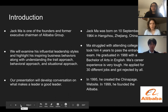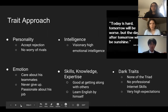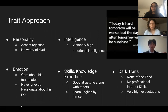Now for Jack Ma's trait approach: he is willing to accept rejections and he doesn't worry about his rivals. He has never been frightened by his rivals. He says that if they underestimate him, it will be good for him. He cares about his teammates and he is passionate about his job, so he has never given up even when he faced bankruptcy.